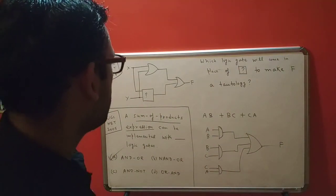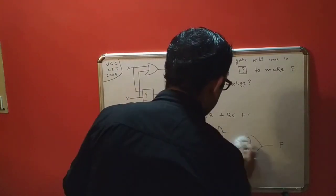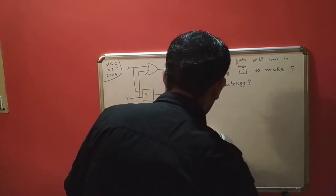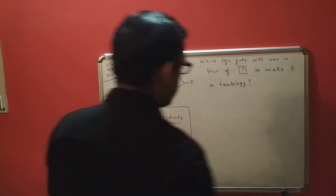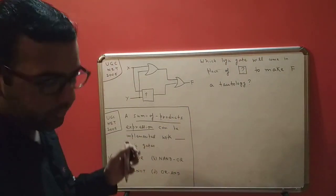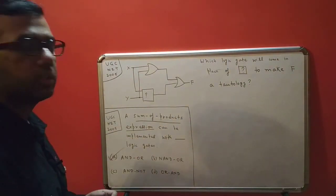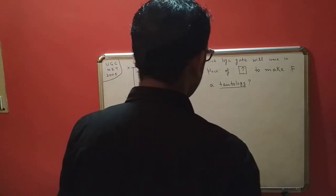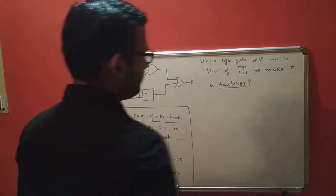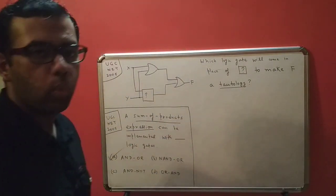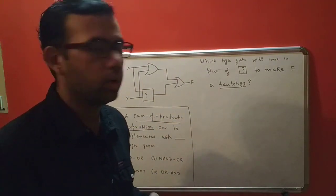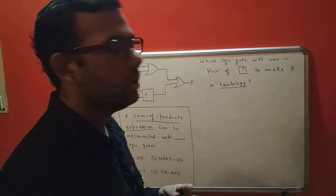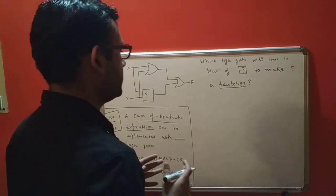Now let's move on to the second question. Here they're asking us what will come in place of the empty box in order to make f a tautology. What is a tautology? A tautology means we will get a value of one — a binary one.